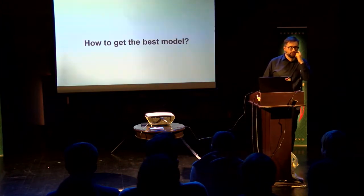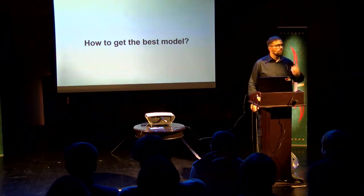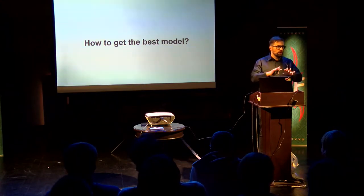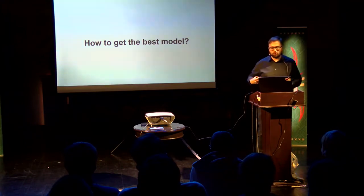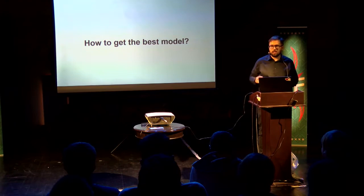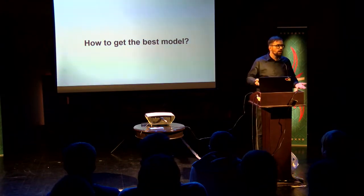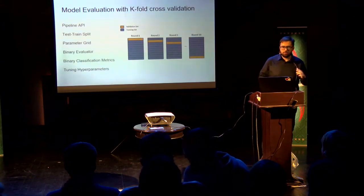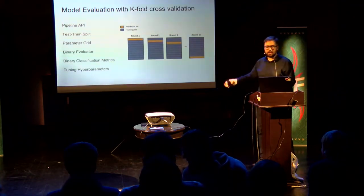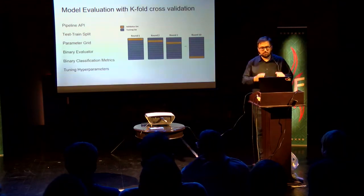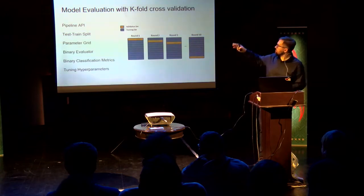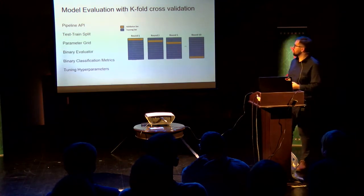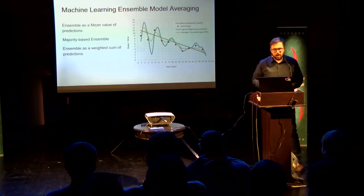How to get the best model? This is a good question. Sometimes it's difficult to evaluate how good a binary classification model is. Currently, Ignite supports metrics only for binary classification. The first idea is splitting the initial dataset into test and train subsets, but sometimes we could get overfitting. The next idea is k-fold cross-validation. During this process, Ignite splits datasets into k consecutive folds, and each fold is used once as validation while the k-1 remaining folds form the training set.